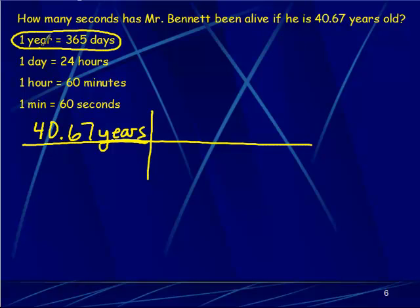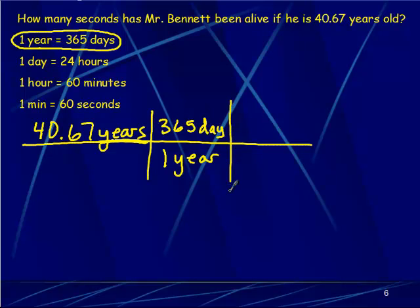I want to cancel out years from my calculation. The conversion says one year, and I'm going to put that one year down here on the bottom, so years and years are going to cancel out. Whatever I put on the bottom, I must put what it is equal to above it — it is equal to 365 days. By doing this, I haven't changed the value; it's still 40.67 years, just now it cancels to days.